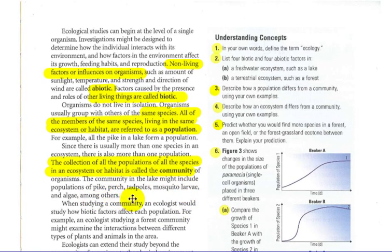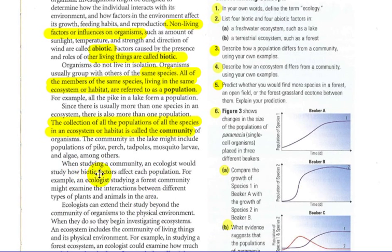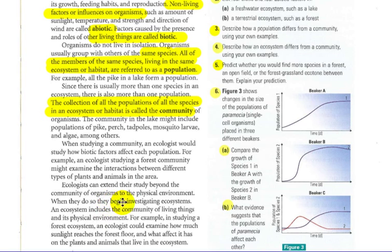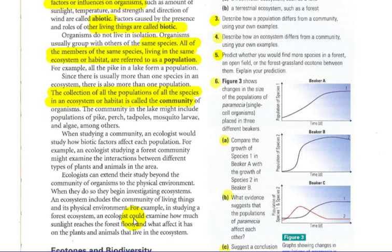The community in the lake might include pike, perch, tadpoles, mosquito larvae, algae, among others. When studying a community, an ecologist would study how biotic factors affect each population — for example, examining the interaction between different types of plants and animals. Ecologists can also extend their study beyond the community of organisms to the physical environment, where they investigate ecosystems. An ecosystem includes the community of living things and its physical environment, or the abiotic non-living things. In studying a forest ecosystem, an ecologist would examine how much sunlight reaches the forest floor — that's abiotic — and what effect it has on the plants and animals, the biotic factors.